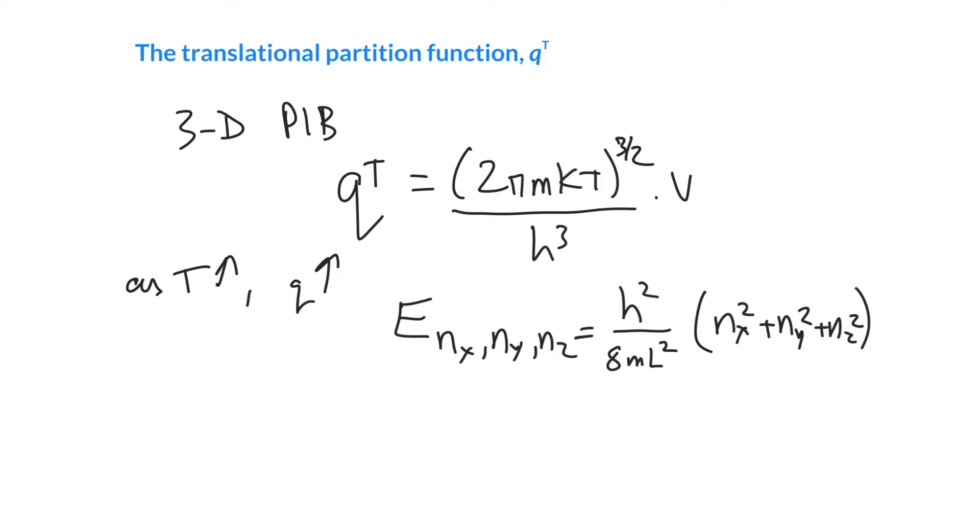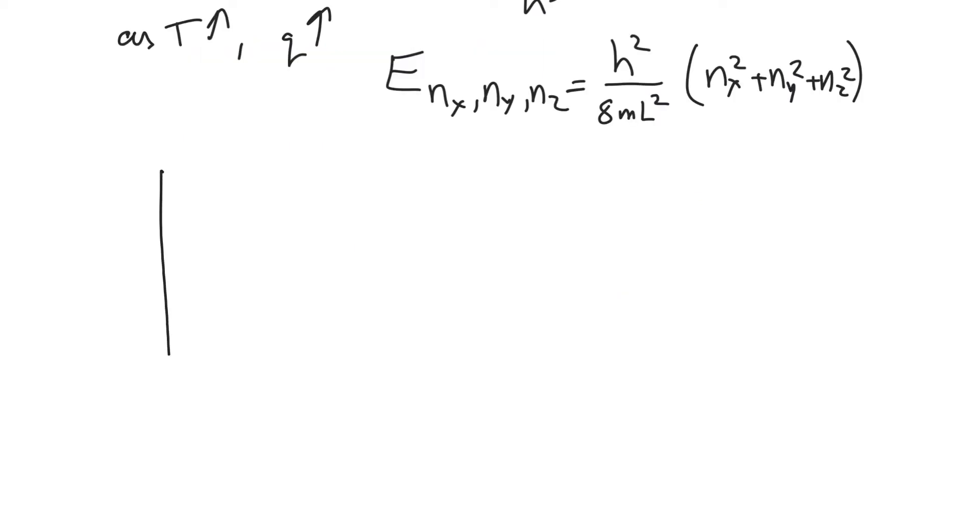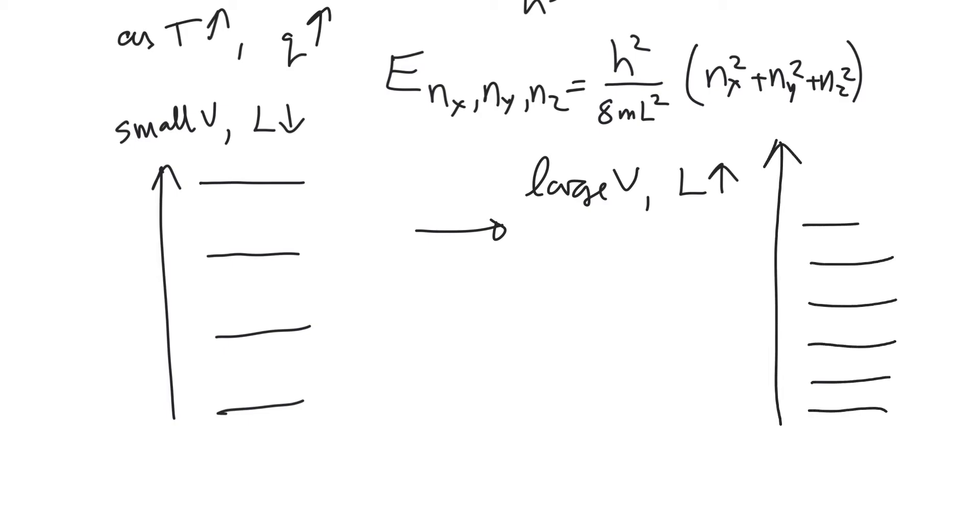And so this is for a cube, but we can see that if we plot these energy diagrams out, we can plot the energy levels looking something like this. So if we've got a small volume, that must correspond to a small value of L. And if we've got a small value of L, since it's in the denominator of this energy expression, we must have large energy values. And so we have our energy states that are quite far apart here. And as we increase the volume, so as we go to a larger volume, that must come from an increase in the box length. And again, if you look at where the length is on this expression here, it's on the denominator. So if L gets bigger, then the energy levels get smaller. So your energy levels actually get closer and closer together.